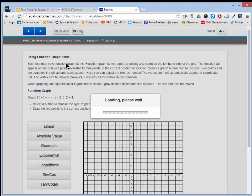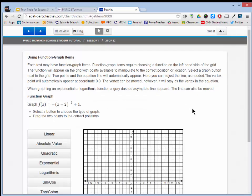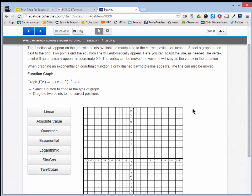On item 26, we will see function graph items. Each test may have function graph items. Function graph items require choosing a function on the left-hand side of the grid. The function will appear on the grid with points available to manipulate to the correct position or location. Select a graph button next to the grid. Two points in the equation line will automatically appear.